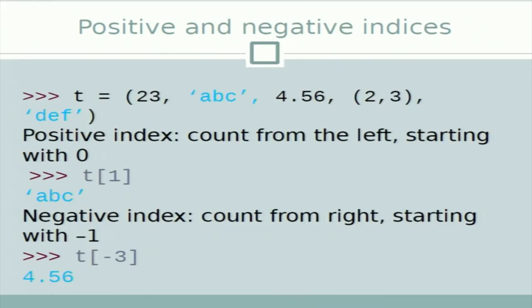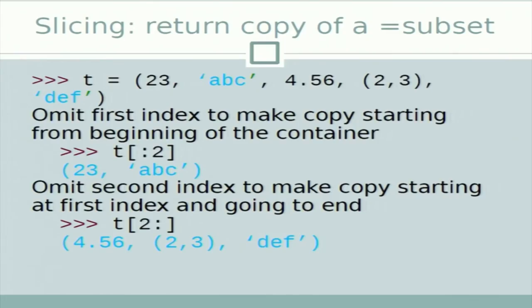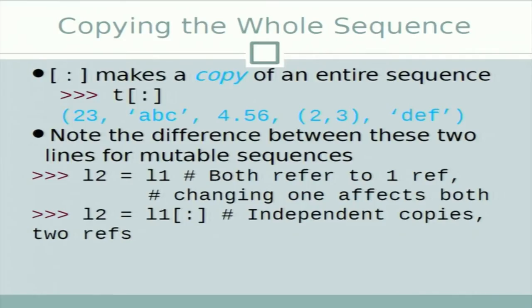We can define positive and negative indexes. Positive index starts from left to right; negative index starts from right to left. There is a concept of slicing in Python — 't[1:4]' returns a copy of the container with a subset of the original members, starting at index 1 and stopping before index 4. We can omit the first index to start from the beginning, omit the second to go to the end, or omit both to copy the whole sequence.